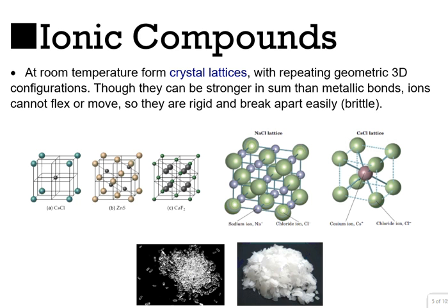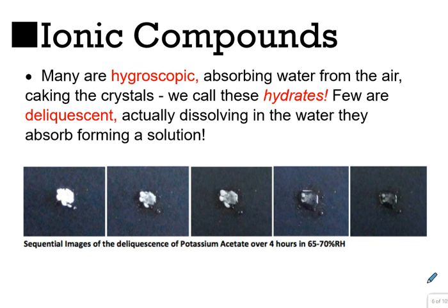That's why we see these crystals that we can snap apart. Ionic compounds can also be hygroscopic, meaning they absorb water from the air — that's where we get hydrates from. We've done a lab with copper(II) sulfate, which is a pentahydrate. Some ionic compounds are so willing to pull in water from the air that we call them deliquescent, meaning they take on so much water that they form droplets in little solutions under relatively normal relative humidity values.